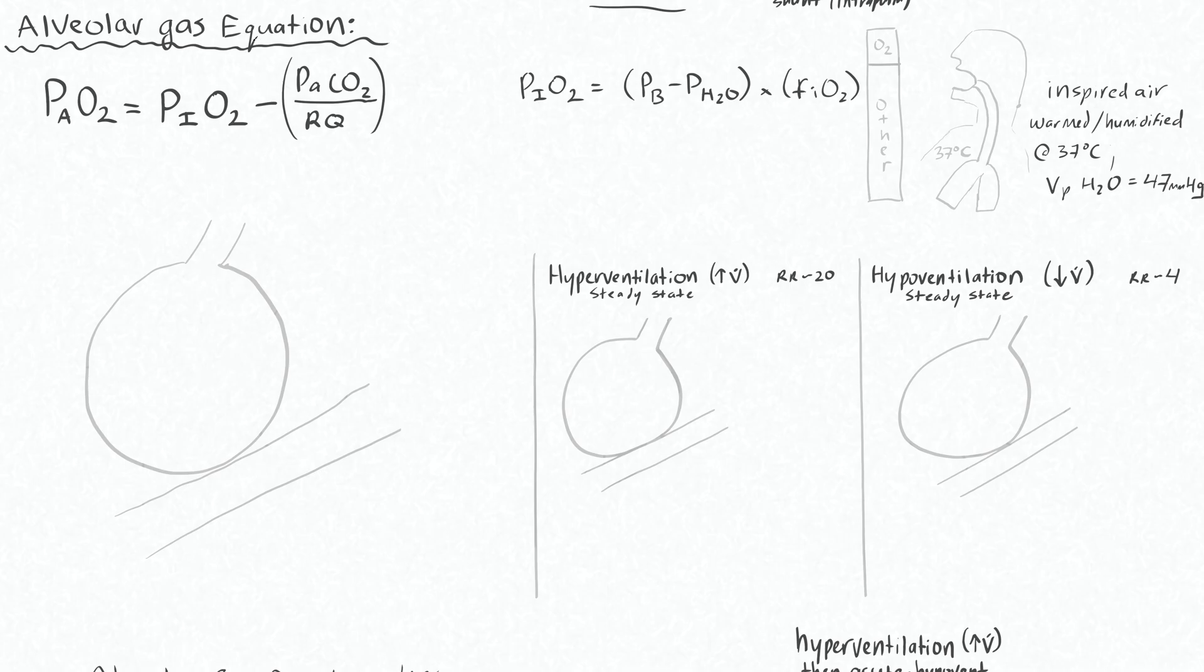We use the alveolar gas equation to calculate what the pressure of the alveolar oxygen is. This equation makes a lot of sense because basically all you're doing is saying that your oxygen that you bring in, so the pressure of the inspired oxygen minus the oxygen that leaves, will be equal to whatever oxygen is in the alveoli.